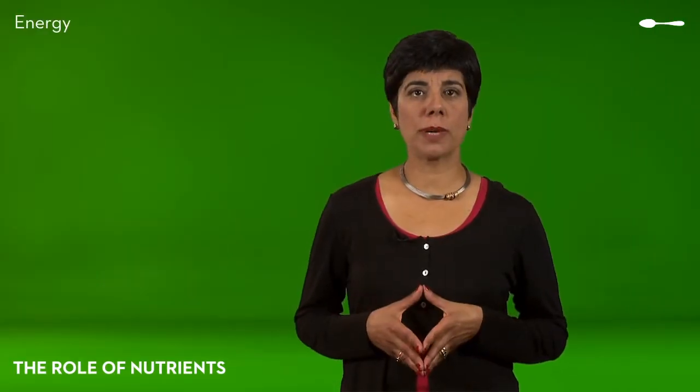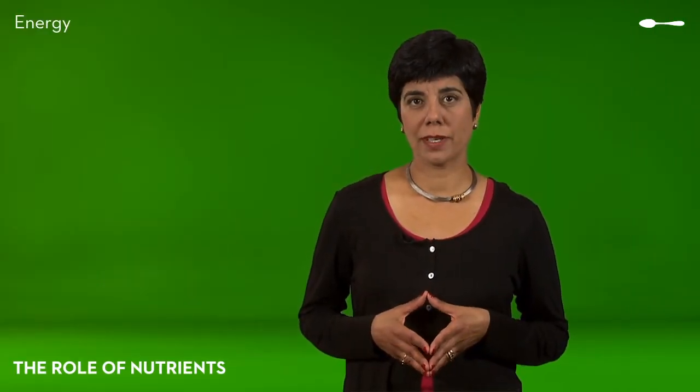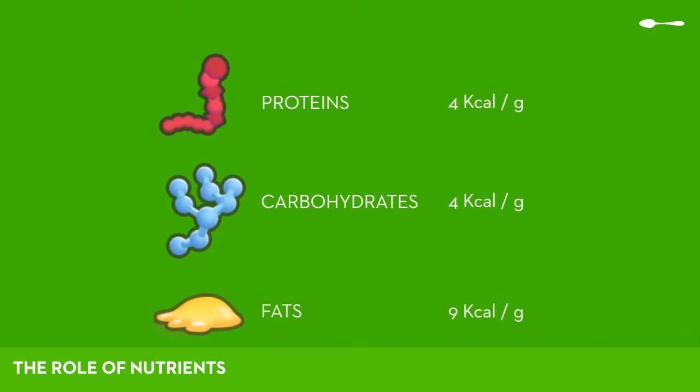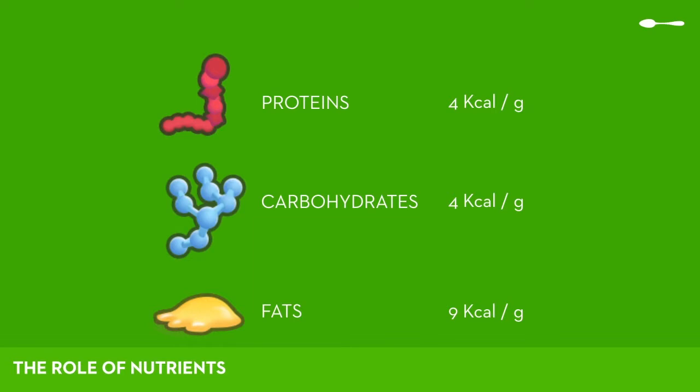Energy nutrients do not all provide the same amount of kilocalories. Carbohydrates and proteins provide 4 calories per gram, while fats provide almost twice that amount. A gram of fat provides 9 kilocalories.